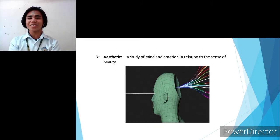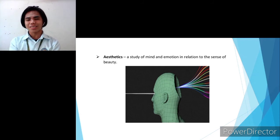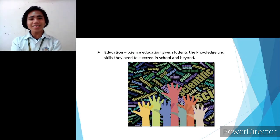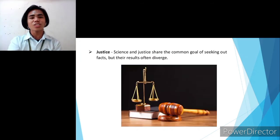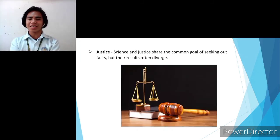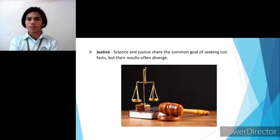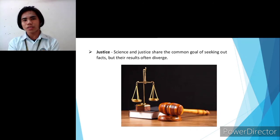The second societal concern is aesthetics — a study of mind and emotion in relation to the sense of beauty — meaning that what we see, how we think, and the interpretation of its beauty comes out. The third one is education — science education gives students the knowledge and skills they need to succeed in school and beyond, teaching us how things started and how we apply that in our aspects of life. The last and fourth one is justice — science and justice share the common goal of seeking out facts, but their results often diverge, meaning that facts of science are different from facts of justice.